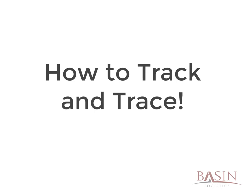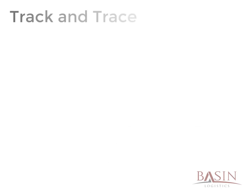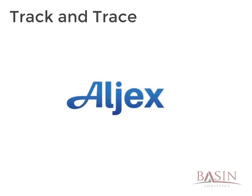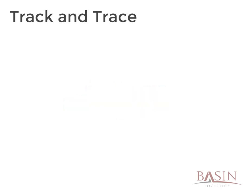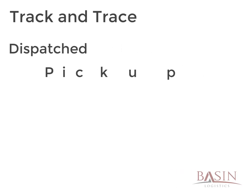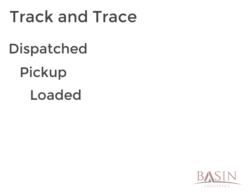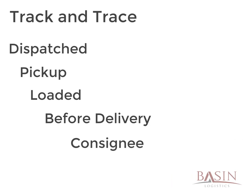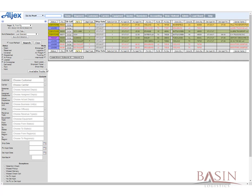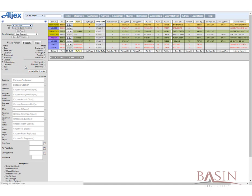Now that you know about the check call process, we can move on to outlining and starting the track and trace process. In addition to updating check calls, you also need to update critical load information into ALJACS. We will walk you through how to update the steps during this video walkthrough. Those steps briefly outlined are dispatched, pickup, loaded, before delivery, consignee, and delivered. To start the track and trace process, after you have logged on to ALJACS, navigate to the top left of the page and by using the drop-down arrow select the Basin Logistics Track and Trace page, or BLTNT page.